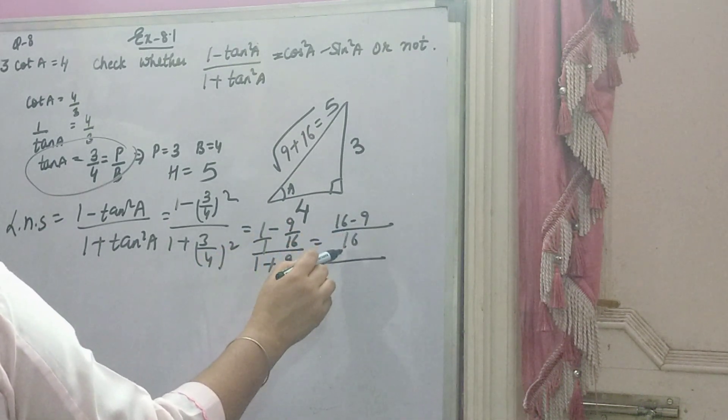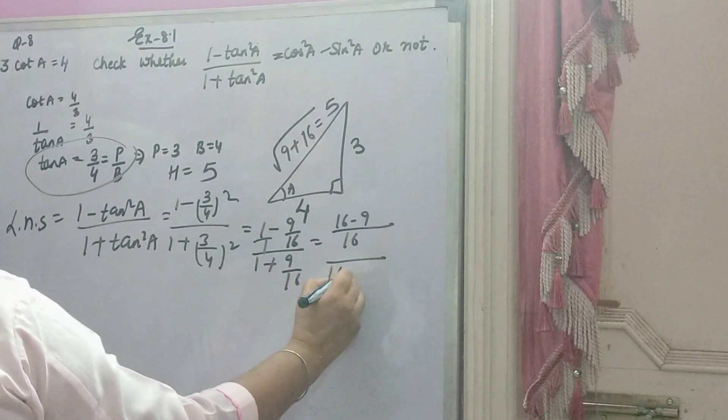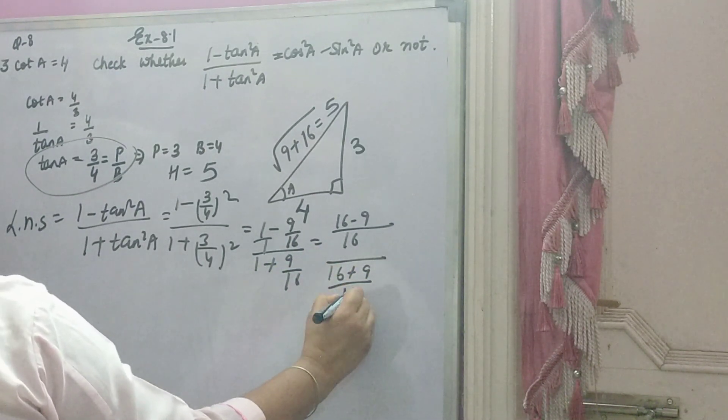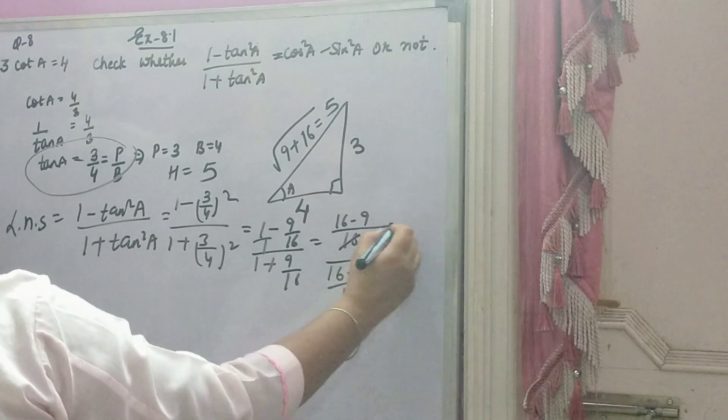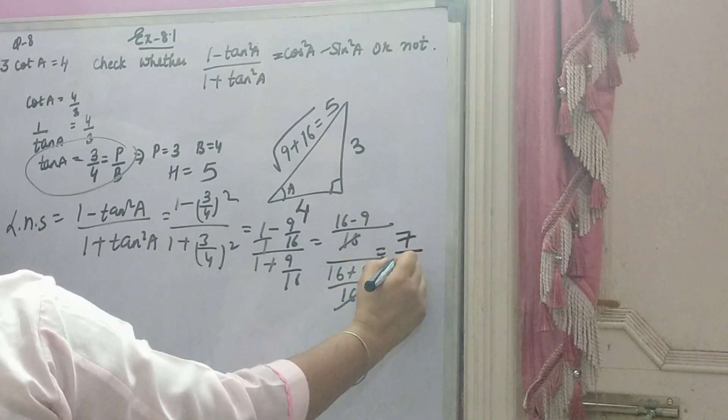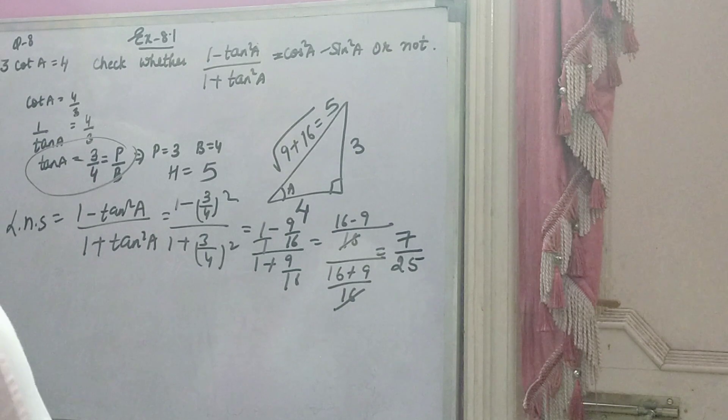So, 16 minus 9 over 16 agi, idhar agi 16 plus 9 over 16. Denominators cancel hajage. 16 minus 9 is 7, and 16 plus 9 is 25. Ye left hand side hai.